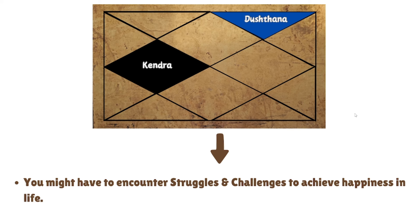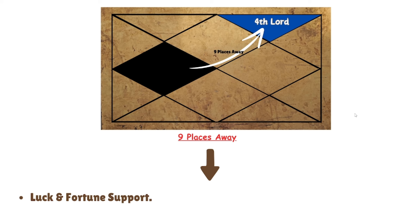The fourth house is a kendra house — one of the main pillars of life which shows happiness — and it is now getting linked with the twelfth house, which is a dushthana house. This shows you might encounter some struggle and challenges to achieve happiness in life, especially material happiness. However, the fourth lord is also going nine places away from its own position, which shows the support of luck and fortune, so there is a possibility you might be able to overcome those challenges depending on the other aspects of your chart.